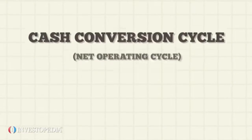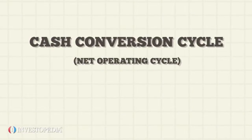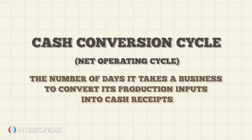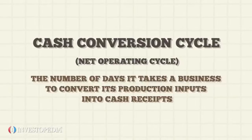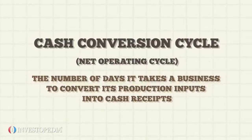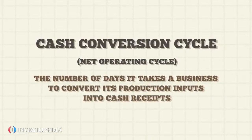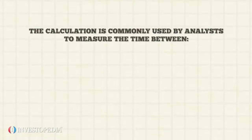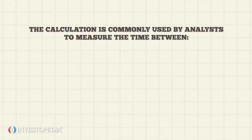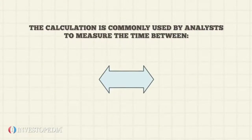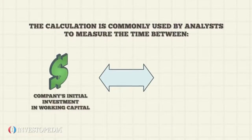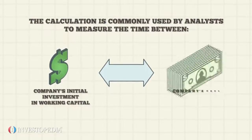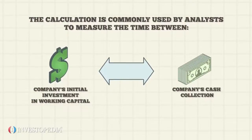Cash conversion cycle, or net operating cycle, is the number of days it takes a business to convert its production inputs into cash receipts. The calculation is commonly used by analysts to measure the time between a company's initial investment in working capital and the company's cash collection.